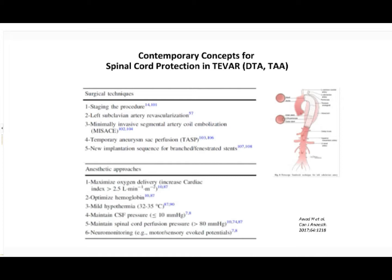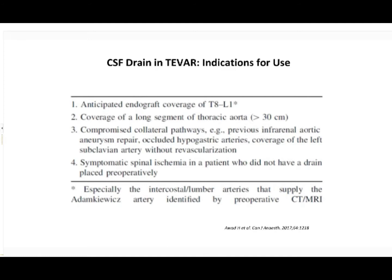CSF drainage with maintenance of CSF pressure at or below 10 mmHg is just one component of this whole bundle of spinal cord protection. Perfusion pressure must be maintained above 80 mmHg — not merely by excessive vasopressor dosage, because there is no pressure generated without decent flow. A good cardiac index is the prerequisite for good inflow pressures into the spinal cord. Neural monitoring is also helpful, but only if you have a treatment plan — without therapeutic response, monitoring is just an exercise in futility. The CSF drain component has a clear indication: if intercostal and lumbar territories are covered, if coverage is extensive, or if other collateral territories have been compromised, or if there is already symptomatic spinal cord ischemia.